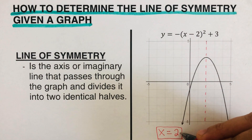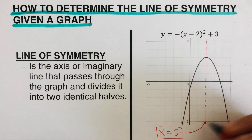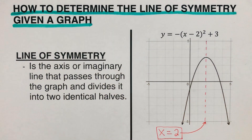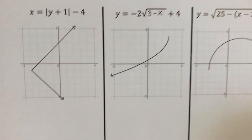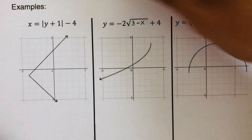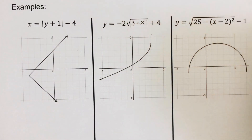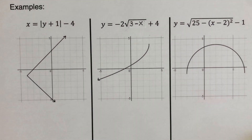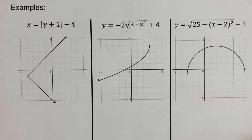So x equals two is the equation for the line of symmetry. At this time I would encourage you to pause this video and try this problem out on your own, and when you're done, unpause it and check your answer.